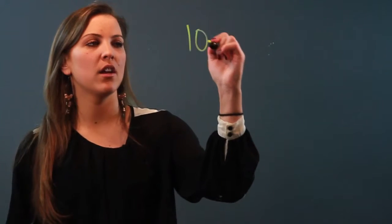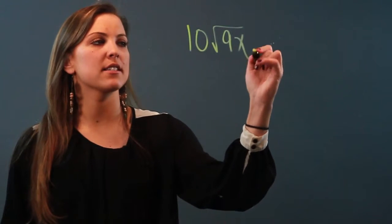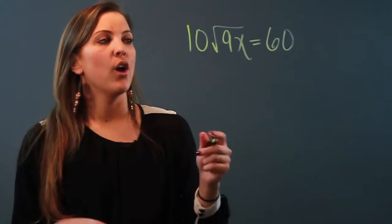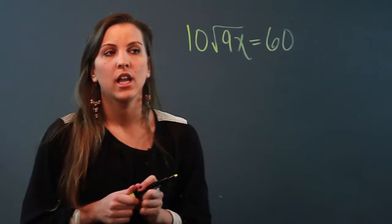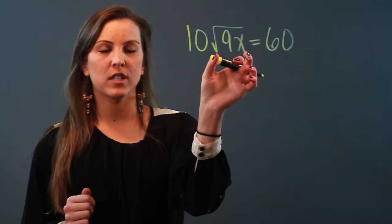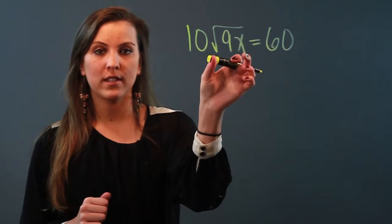So if we've got the equation 10 radical 9x equals 60, first and most important thing is that you have to first get the square root sign alone on one side of the equal sign.